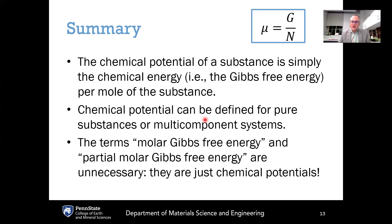To summarize: the chemical potential is simply the Gibbs free energy divided by the number of moles of the chemical species, μ equals G divided by N. It can be defined for pure substances or multi-component systems. The terms molar Gibbs free energy and partial molar Gibbs free energy are unnecessary — they are simply chemical potentials. I hope you enjoyed this lecture. Please let me know in the comments if you have any questions, and if you liked this video, please click the like button and subscribe to the channel. Thank you very much and have a great day.